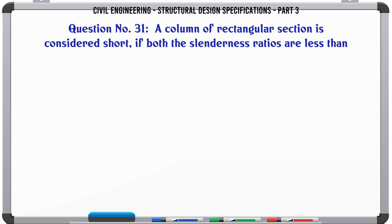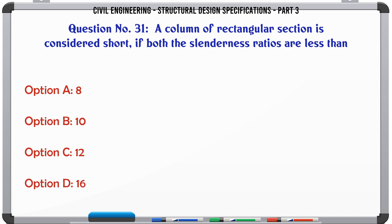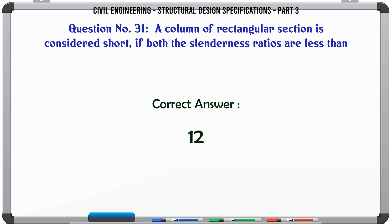A column of rectangular section is considered short if both slenderness ratios are less than: a. 8, c. 12, d. 16. The correct answer is: 12.